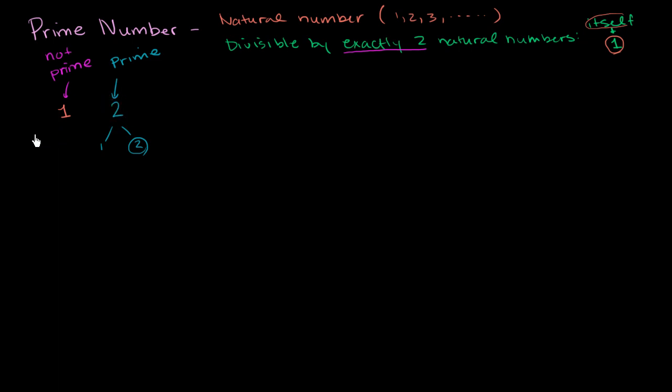And I'll circle the prime numbers. Now let's try 3. And 2 is interesting, because it is the only even number that is prime. If you think about it, any other even number is also going to be divisible by 2, above and beyond 1 and itself. So it won't be prime.